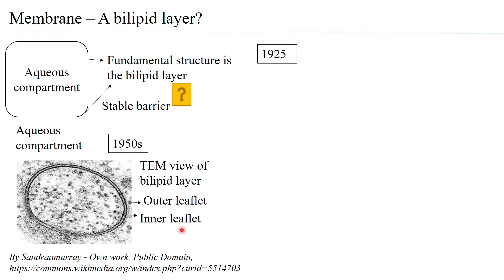Even before the microscopic study of the membrane, in 1925 two scientists, E. Gorter and R. Grendel, had already begun studying the membrane and they used the RBC membrane for the study. The choice of the RBC membrane is very strategic because RBCs have no nucleus, so they do not have internal organelle membranes, and therefore what can exclusively be studied is the plasma membrane. Plus, you get a lot of RBCs from the blood, so isolating them is also easy.